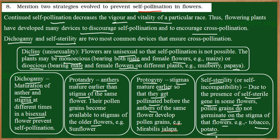These are the outbreeding devices by which self-pollination would be prevented and cross-pollination would be ensured.